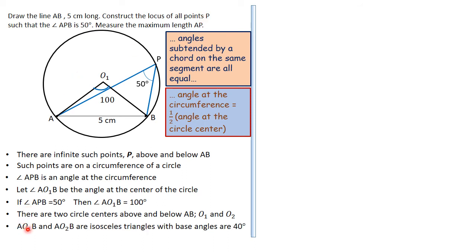Triangles AO₁B and AO₂B are isosceles with the center angle of 100° and base angles of 40° each, because O₁A and O₁B are both radii of the circle, making triangle AO₁B isosceles. The same applies to the triangle below with center O₂ — base angles are 40° and the apex angle is 100°.